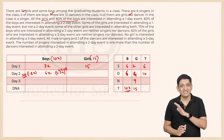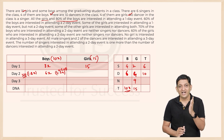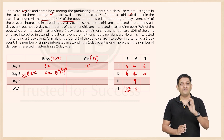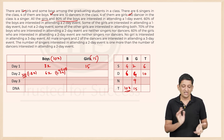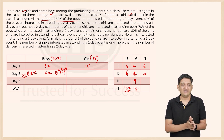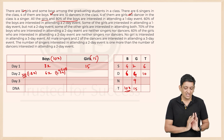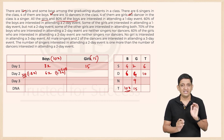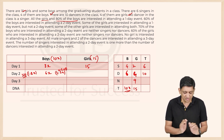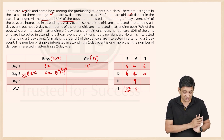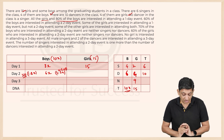1.8x will essentially crack this set — once you figure it out, you will get at least one answer for sure. The total number of boys can be determined very easily once you work with 1.8x.